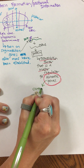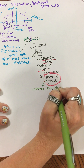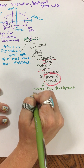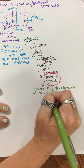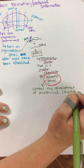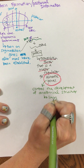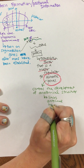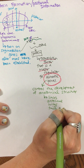Homeotic genes are responsible for controlling the development of anatomical structures, which include limbs, antenna, wings, tails, and so on.